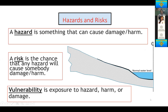Hazards and risks: as defined, a hazard is something that can cause damage or harm — obviously flood is a hazard. A risk, on the other hand, is the chance that any hazard will cause somebody damage or harm, so in risk we will be talking about probability. And if you mention hazard and risk, you cannot disregard vulnerability, which is exposure to hazard, harm, or damage.